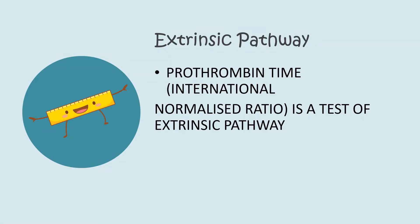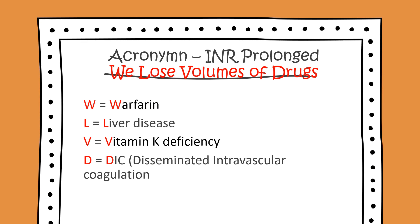The coagulation pathways are composed of the extrinsic and intrinsic pathways. The extrinsic pathway is assessed by the INR (International Normalized Ratio). Using the acronym 'We Lose Volume of Drugs': W equals warfarin, which increases the INR; L equals liver disease; V equals vitamin K deficiency; D equals DIC (disseminated intravascular coagulation). All four of these conditions can increase the INR.